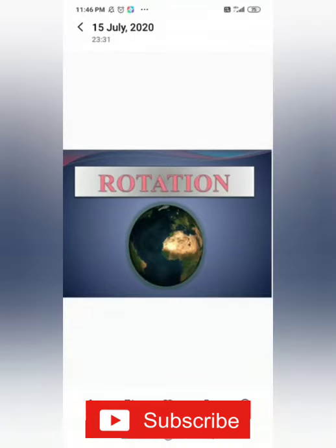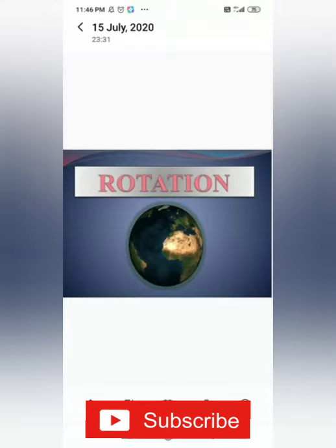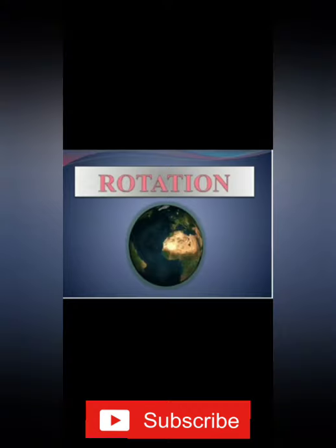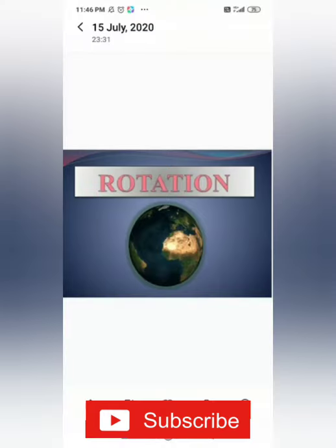As the earth is spherical in shape, only one half of it is illuminated by the sun at any time, while the other half remains dark. The illuminated portion of the earth experiences day, whereas the darkened part of the earth experiences night. The line which divides the surface of the earth into a lighted half and a dark half is called the terminator line.